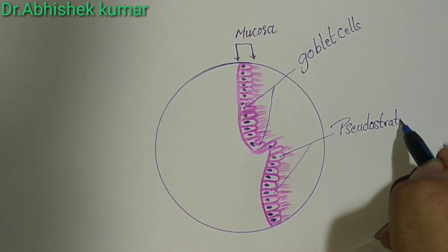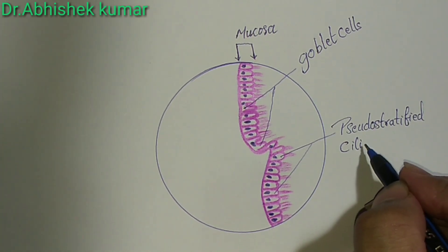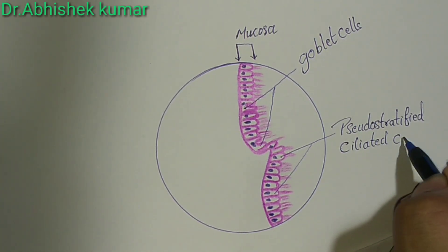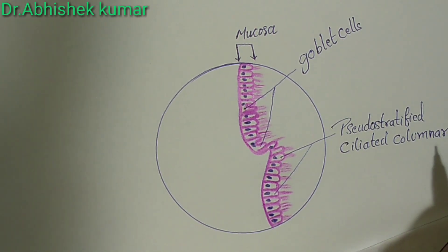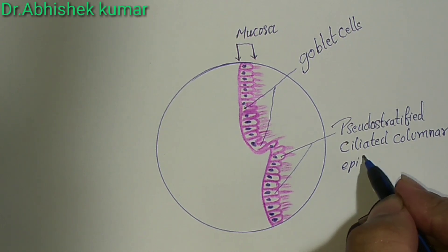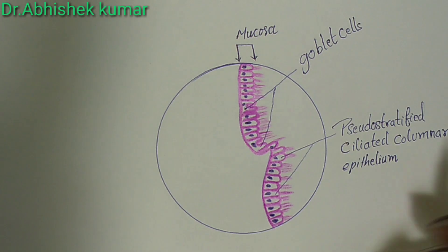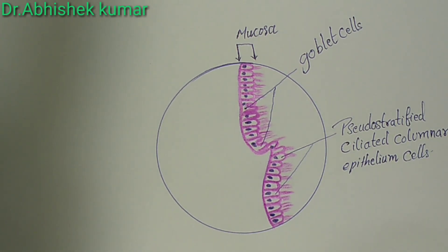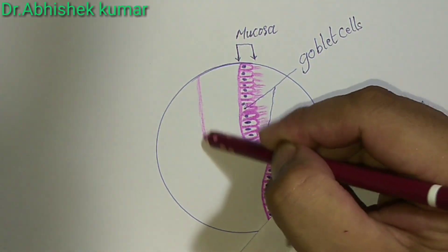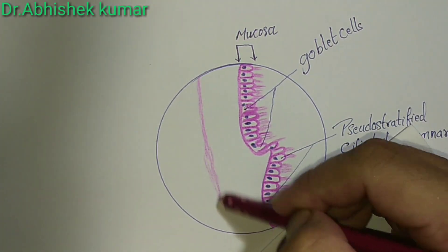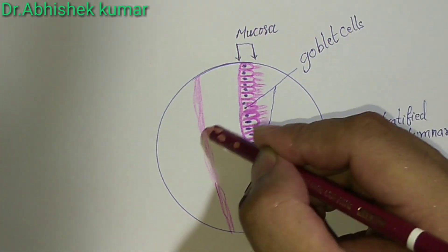Pseudo-stratified ciliated columnar epithelium. Whenever we see the goblet cells and pseudo-stratified ciliated columnar epithelium, this is one of the identification points of trachea.